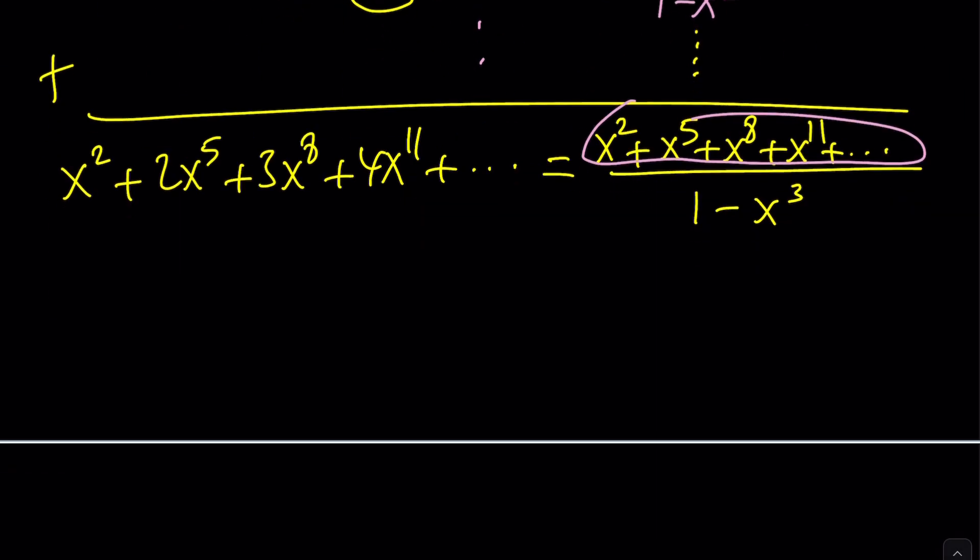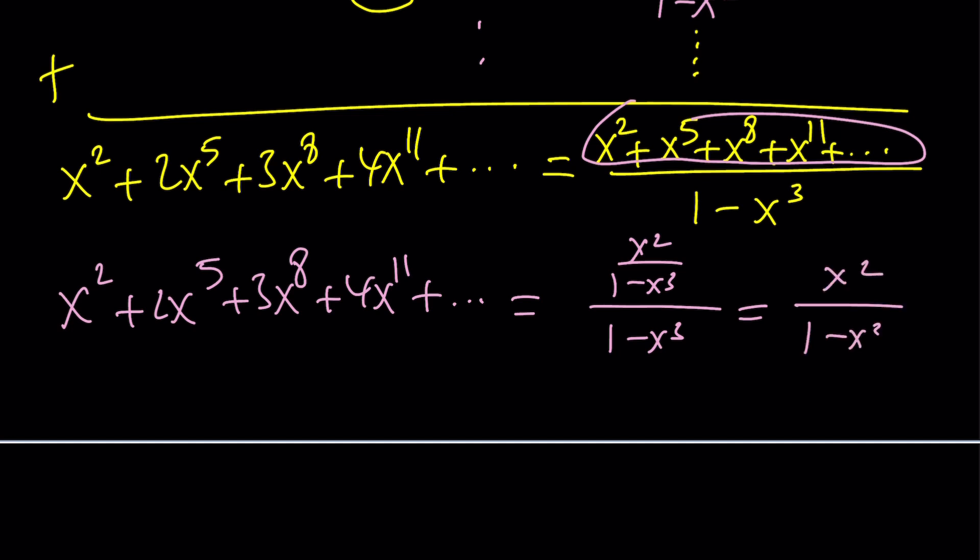And guess what? That's going to give you another series. It's actually the same series. So we can go ahead and replace this with x squared divided by 1 minus x cubed. But it's being divided by 1 minus x cubed two times in a row. In other words, we have x squared divided by 1 minus x cubed divided by 1 minus x cubed. It just means x squared is divided by 1 minus x cubed squared. So we got the answer.